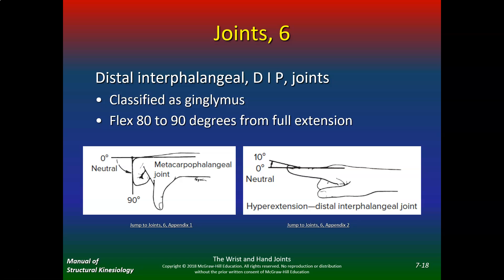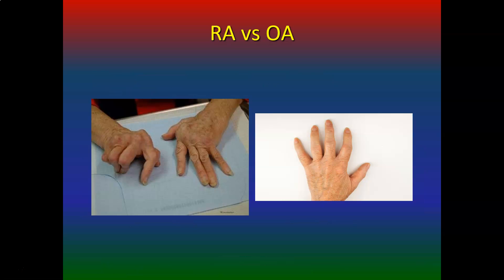The DIP joints are also classified as ginglymus with 89 degrees of flexion from full extension. Looking at this comparison of RA versus OA: rheumatoid arthritis is systemic, so you'll see deformities on both sides with no cure unfortunately. Osteoarthritis is what most of us will get from old age — just wear and tear of the joints.